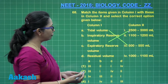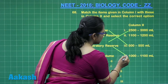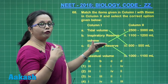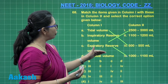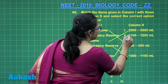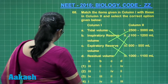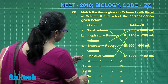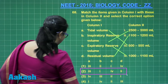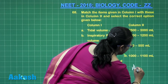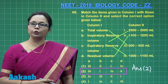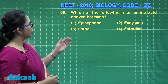Expiratory reserve volume is the volume of air forcefully exhaled over and above tidal volume, which is 1000 to 1100 ml. Residual volume is the air remaining in the lungs even after forceful expiration, and it is 1100 to 1200 ml. The correct match is option 2.